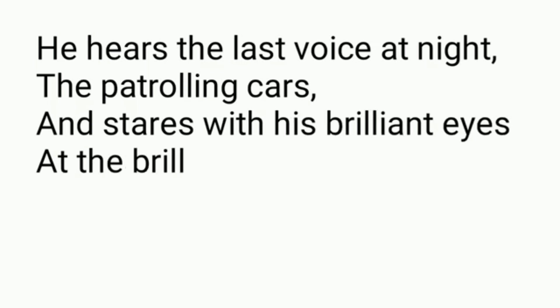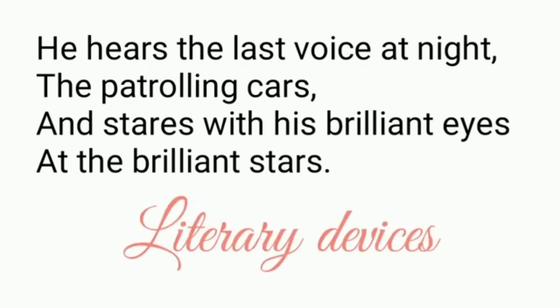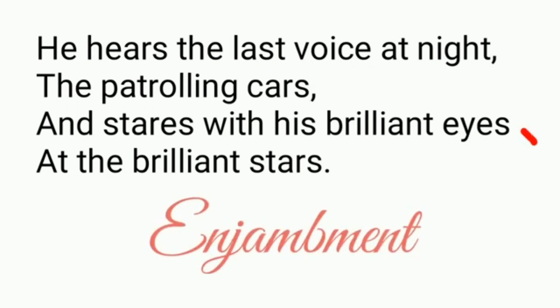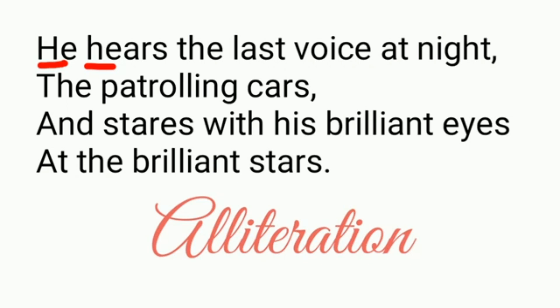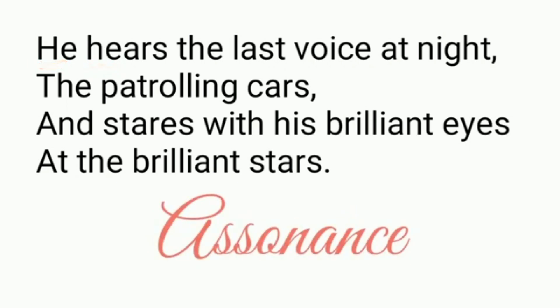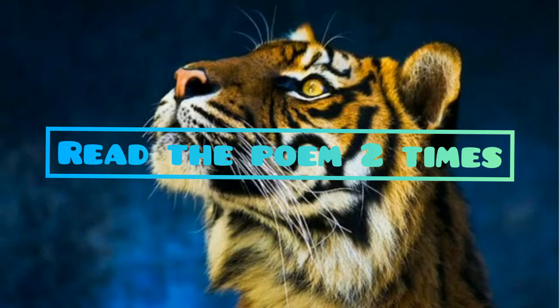Now the last stanza: He hears the last voice at night, the patrolling cars, and stares with his brilliant eyes at the brilliant stars. In this stanza you can see enjambment — the third line is continued into the fourth without a punctuation mark. Alliteration is also used — the 'h' sound is repeated near to each other. Then we have assonance where the 'I' sound is repeated. That's all for today. I hope you were able to understand the literary devices and the poem. Read the poem well. Thank you.